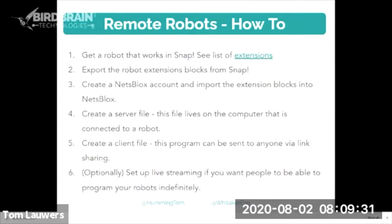The client file is what you would send your students or anyone else if you were creating a remote robot at your house. The last optional thing you can do is set up live streaming via video camera, if you want people to be able to view your robots and program them 24/7. In this workshop, we're doing this live over video so you can instantly see things happen as you're programming the robots. If you were a teacher, you might have a live synchronous session where students build their program and watch it run on the robot.